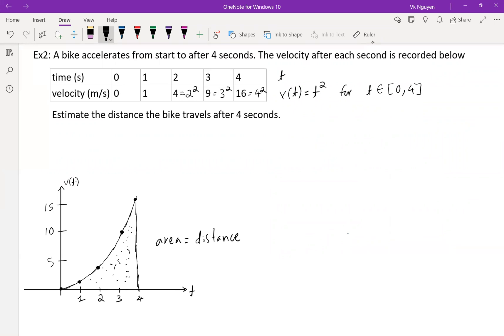We cannot find the area right away because this is not a rectangle. However, we can use rectangles to estimate the area. So we can draw a bunch of rectangles of equal width. If I begin from the left point, this would be my first rectangle here. And this would be my second rectangle. Third rectangle. Fourth rectangle.